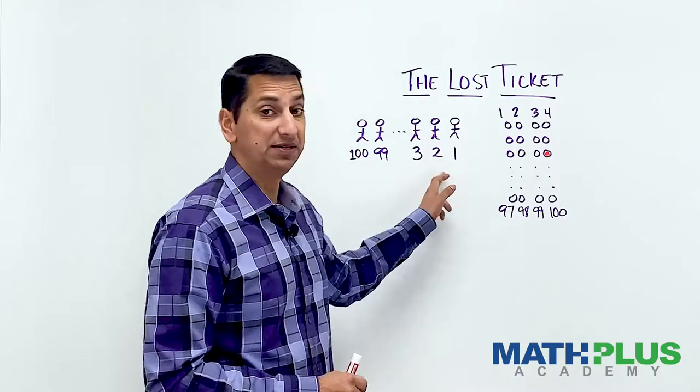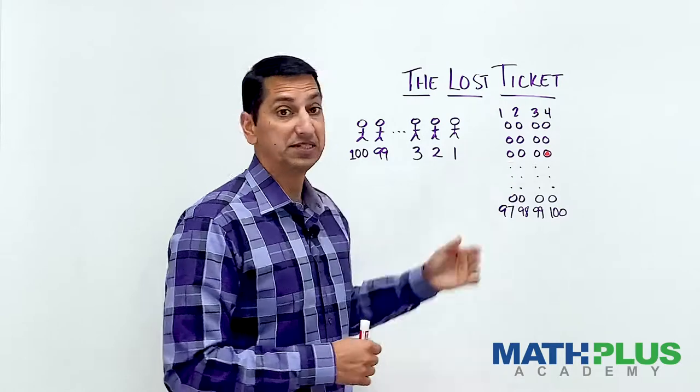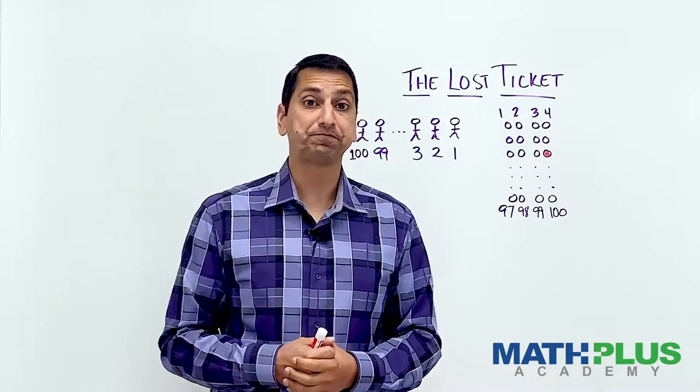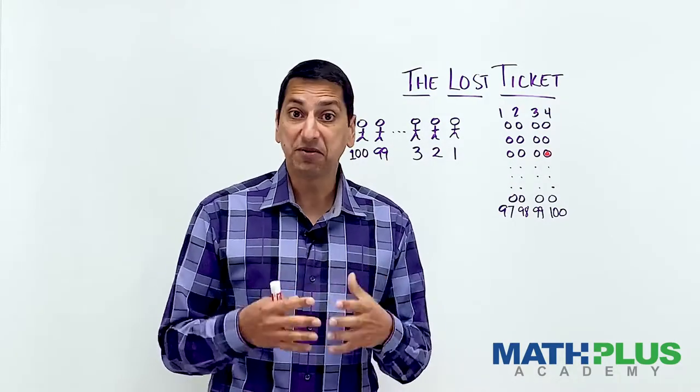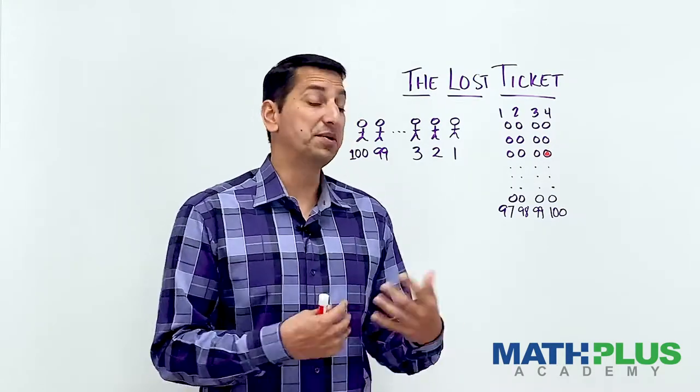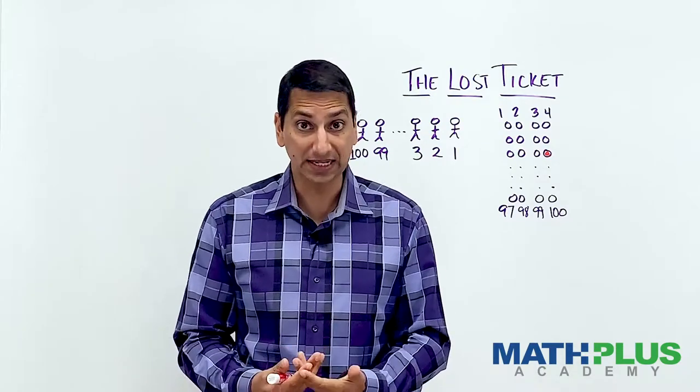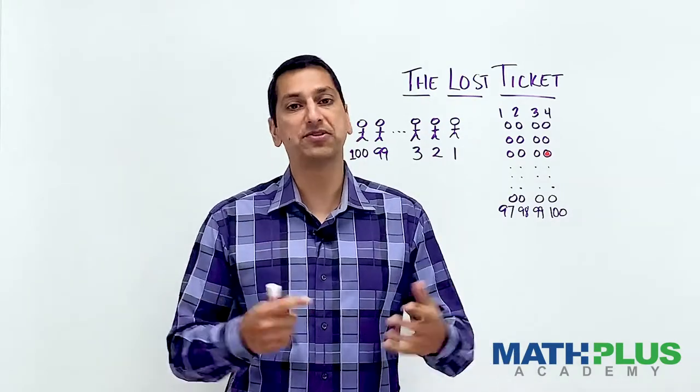The second person has a boarding pass. Maybe it says seat 18. So they go and sit in their seat because nobody's there. So this continues. Everyone sits in their assigned seat unless there's somebody already sitting in it. If somebody is already sitting in it, then they choose another seat at random.